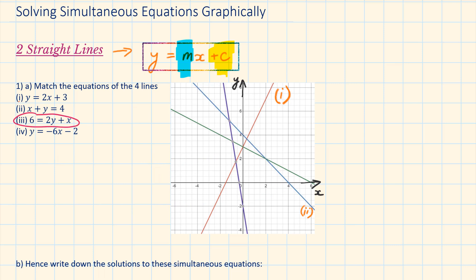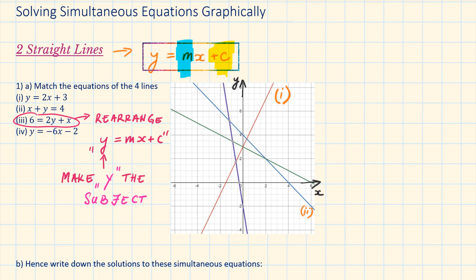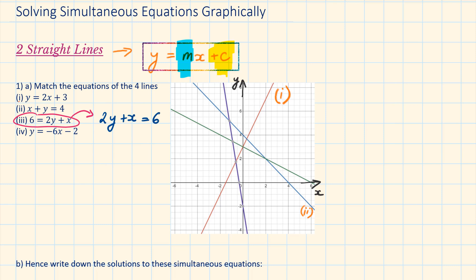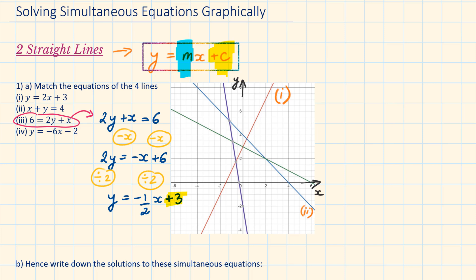Part 3: 6 equals 2y plus x. Let's rearrange this to make it comparable with y equals mx plus c. 2y plus x equals 6; subtract x from both sides, then divide across by 2. Our line is y equals minus half x plus 3. It's crossing the y-axis at 3 and has a negative gradient, so the line is going downwards. We just found our line. Let's label it.